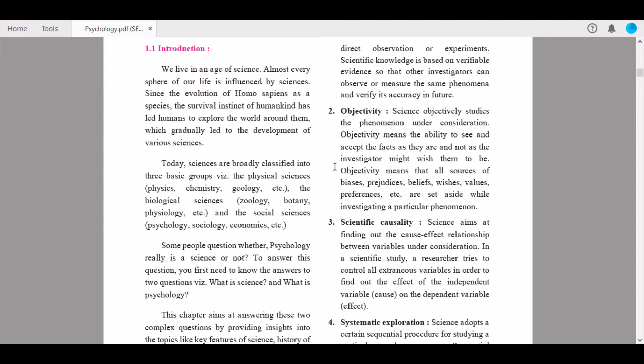The second is objectivity. Science objectively studies the phenomenon under consideration. Objectivity means the ability to see and accept the facts as they are, not as the investigator might wish them to be. Objectivity means that all sources of biases, prejudices, beliefs, wishes, values, preferences are set aside while investigating a particular phenomenon. An investigator should be inert as possible so that he can investigate the phenomenon and measure its accuracy.